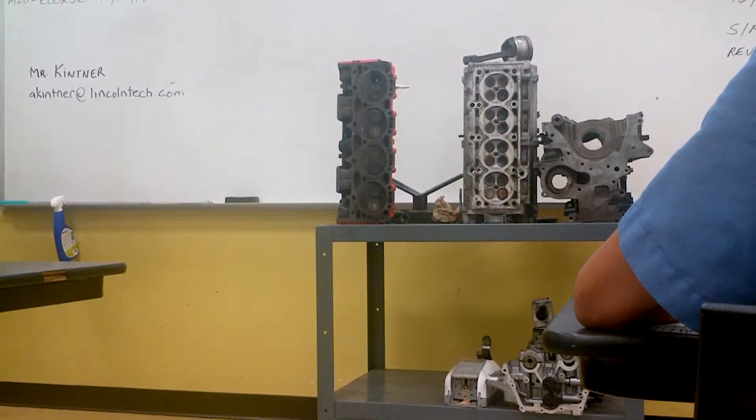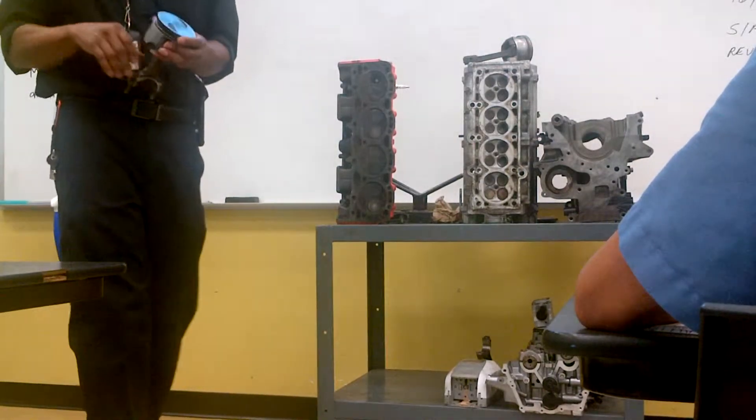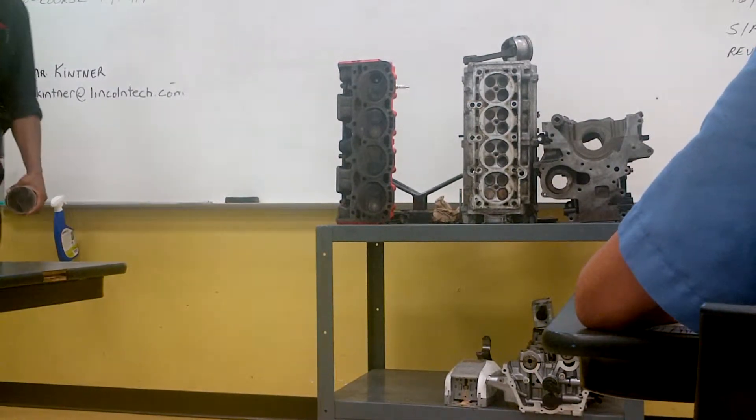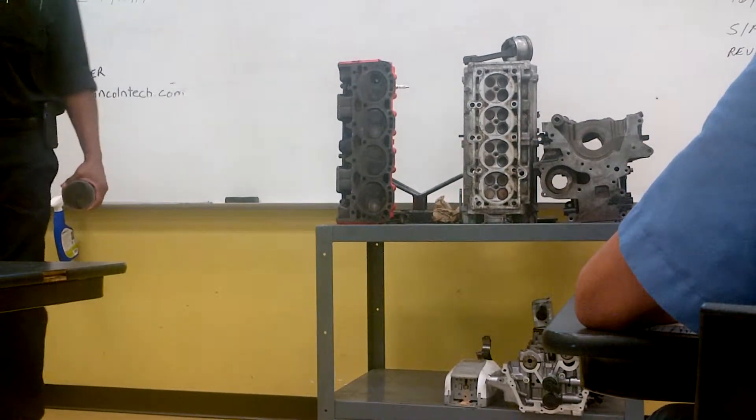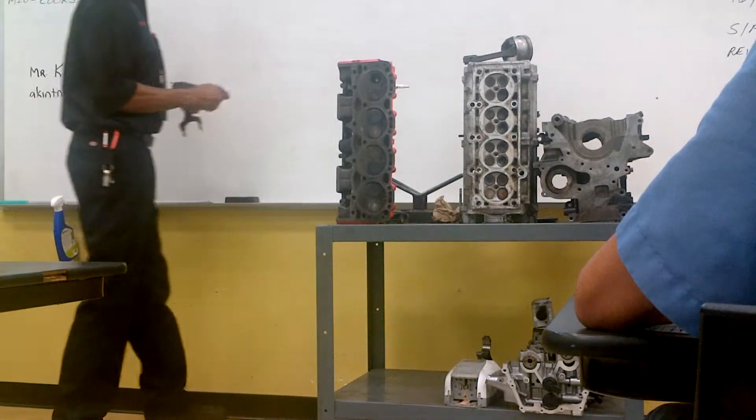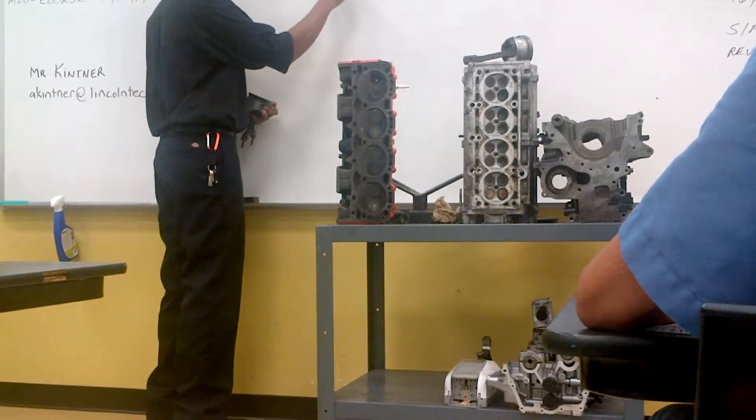Really old design was called a flathead. The flathead carried the combustion chamber in the head itself. The valves were actually built into the block. The camshaft was in the block, the valves were in the block, and the head itself only contained the combustion chamber.